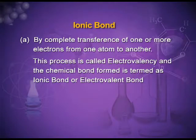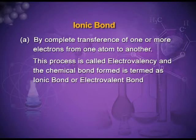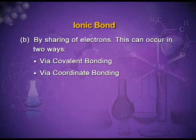Ionic bond is formed by the complete transference of one or more electrons from one atom to another; this process is called electrovalency, and the chemical bond formed is termed the ionic bond or electrovalent bond. By sharing of electrons, a covalent bond is formed. When one electron from each atom is shared, it is a normal covalent bond. But in a special type of sharing where both electrons are contributed by one atom, it is a coordinate bond — a special type of covalent bond.